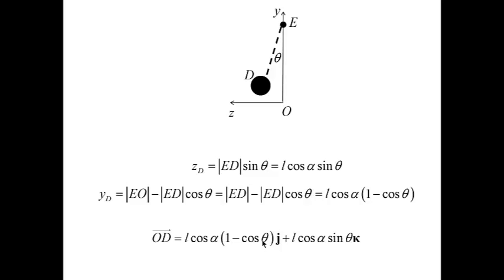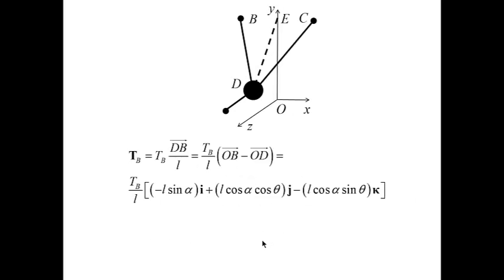Now, I am ready to proceed with calculations of the forces. The force db is computed as the magnitude of tb times the unit vector of db or the ratio of db divided by L, the length of the wire. db, in turn, could be calculated as the difference between the vector OB and the vector OD. B is the terminal point, d is the origin for this vector. Since I have calculated both OB and OD previously, I can put it together to obtain the following expression for the vector tb.